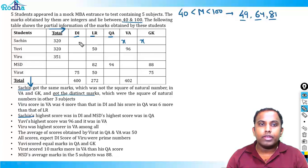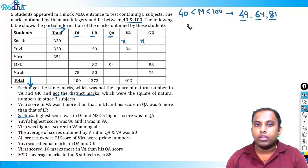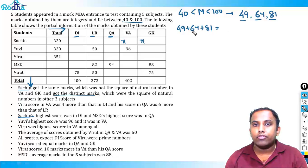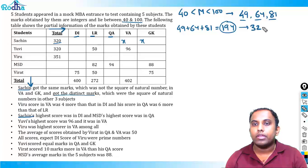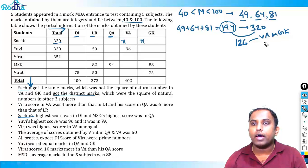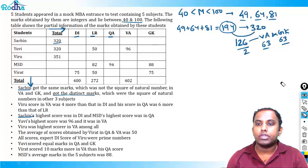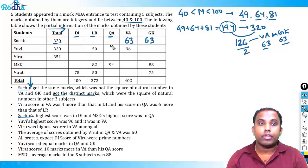Those three values 49, 64, and 81 fill Sachin's DI, LR, and QA in some order. Their sum is 194. Sachin's total is 320, so the remaining marks for VA and GK sum to 126. Since they are equal, each is 63. So Sachin's VA and GK are both 63.